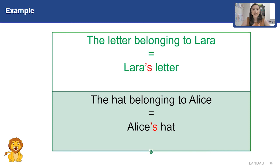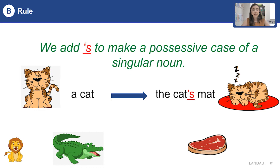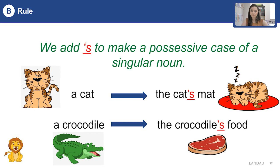We add apostrophe and S to make a possessive case of a singular noun. For example, a cat — a cat has a mat, so this is a cat's mat. Or a crocodile — a crocodile has food, so it's crocodile's food.